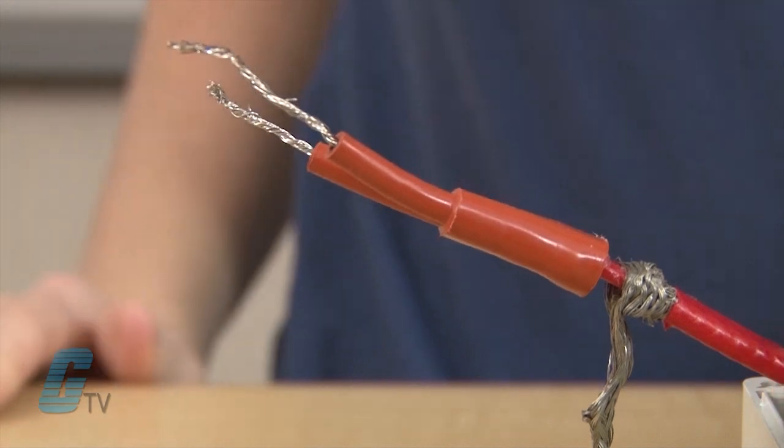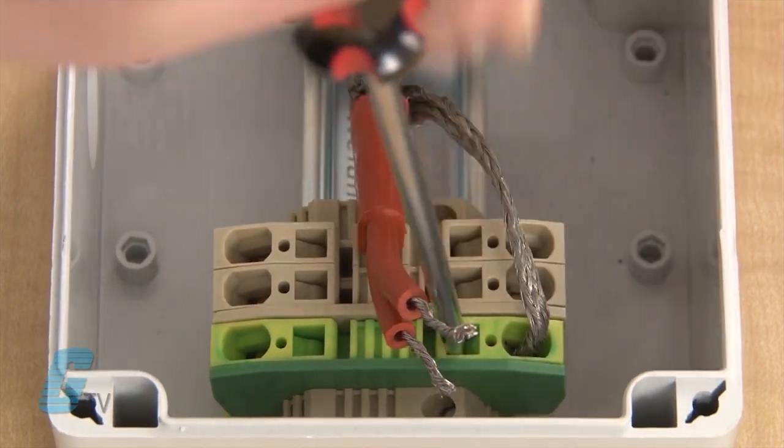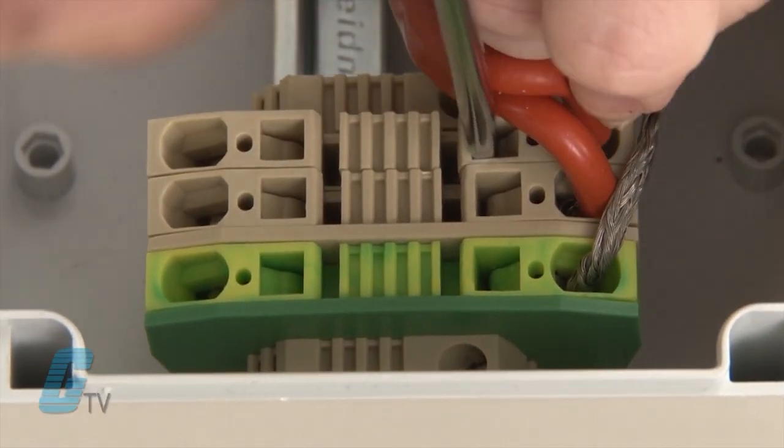After I make sure that the unit fastened on all ends, I can install the braid to the ground terminal block and the bus wires to the two other terminals.